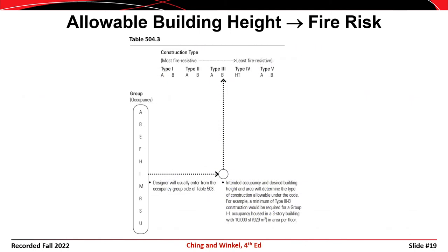Generally, an architect or engineer will use this table by entering from the left with a known occupancy group for the structure. At that point, the architect or engineer can determine which type of construction is required for a required building height, or they can determine the height limitation based on a construction type that has been decided upon already.